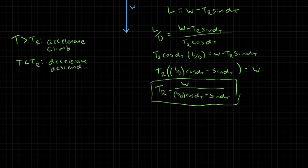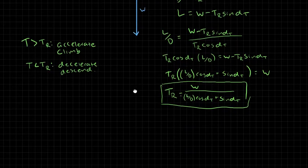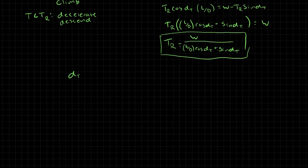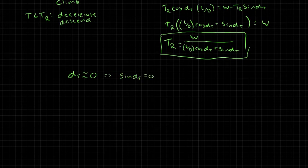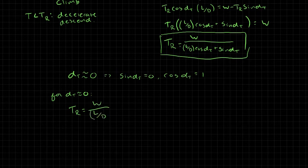It's common to assume the thrust angle is very small, or approximately zero. If alpha_t is approximately zero, then sine of alpha_t equals zero and cosine of alpha_t equals one. Plugging that back into our expression, the thrust required simplifies to: T_r equals weight divided by the lift-to-drag ratio.